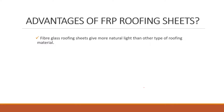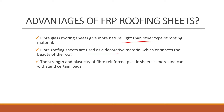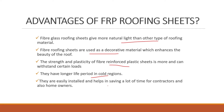Advantages of FRP roofing sheets: they give more natural light than other types of roofing sheets. They are used as a decorative material which enhances the beauty of the roof. The strength and plasticity of FRP sheets is more and can withstand certain loads. They have a longer life period, are easy to install in cold regions, and help in saving money and time for contractors as well as homeowners.